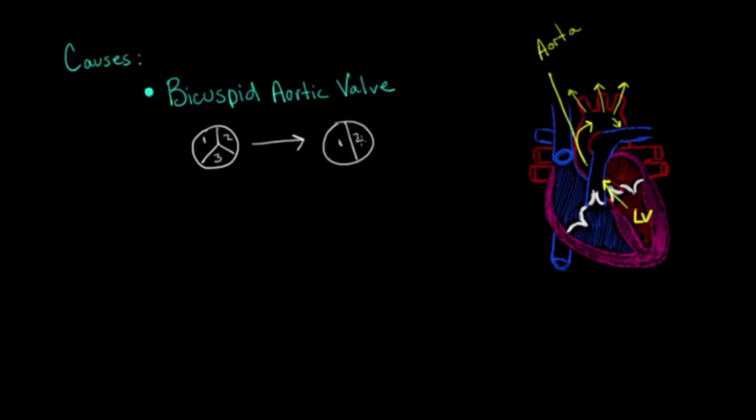Now, the reason why a bicuspid aortic valve is more likely to get aortic stenosis, or is more likely to become stenotic, is because you actually have two cusps doing the work of three. And so these valves, these bicuspid valves, actually get damaged quicker and can become calcified over time and are thus more likely to become stenotic and more likely to do so at an earlier age.